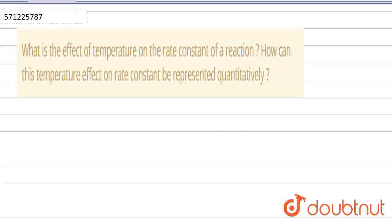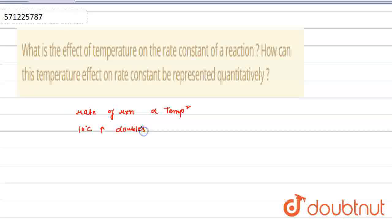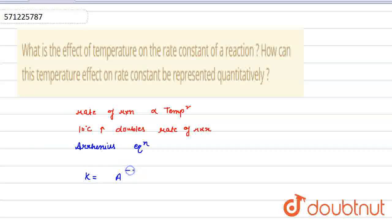Hello, the question is: what is the effect of temperature on the rate constant of the reaction? How can this temperature effect on the rate constant be represented quantitatively? The rate of reaction is directly proportional to temperature, as every 10 degree rise in temperature doubles the rate of reaction. So how can this be defined? To define this concept, an equation is given which is known as the Arrhenius equation. According to the Arrhenius equation, rate constant k equals A times e to the power of minus Ea upon RT.